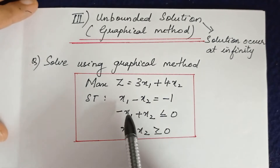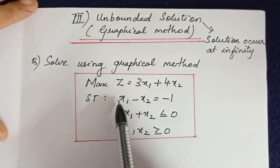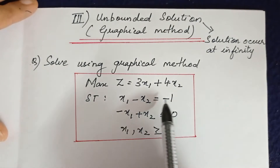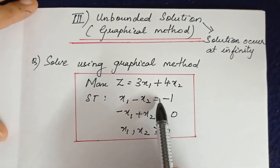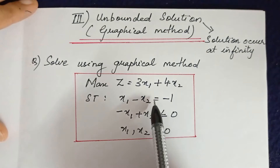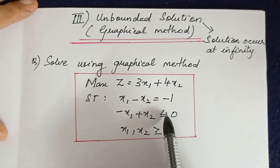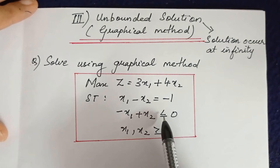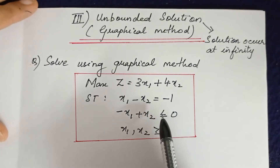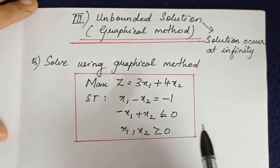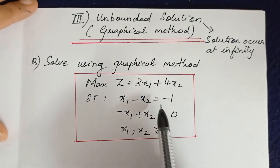The first constraint is an equation (equal to), and the second constraint is an inequality (less than or equal to). Before we solve using the graphical method, we need to convert all inequalities into equations.